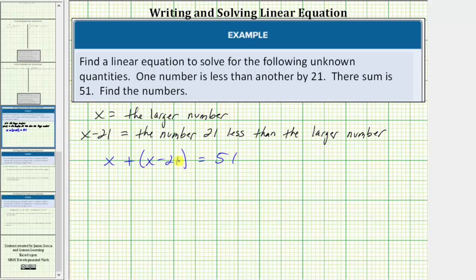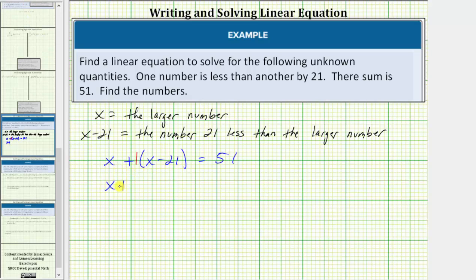Because we are adding here, we can just drop the parentheses. Or if it's helpful, we can think of distributing a positive one, which will not change the sign of either term. This is equivalent to x plus x minus twenty-one equals fifty-one.